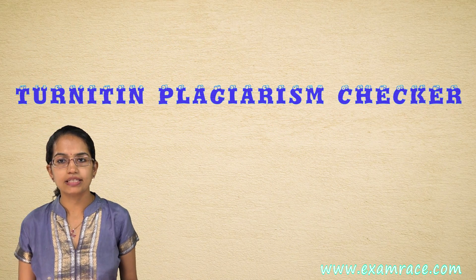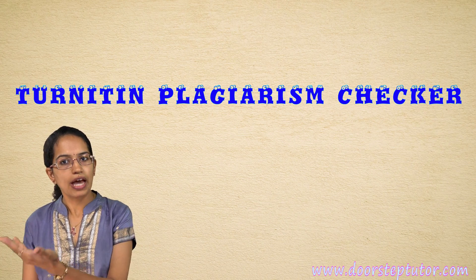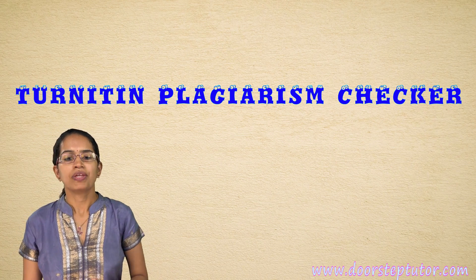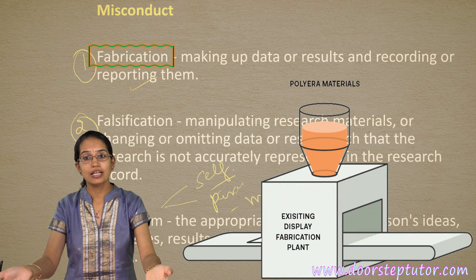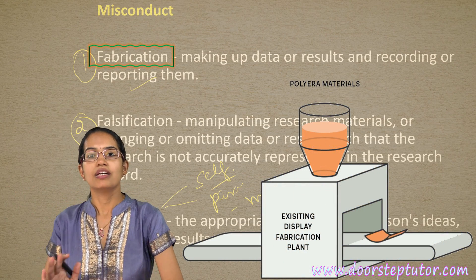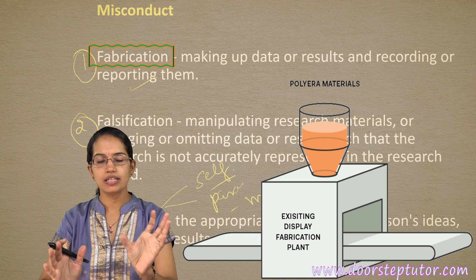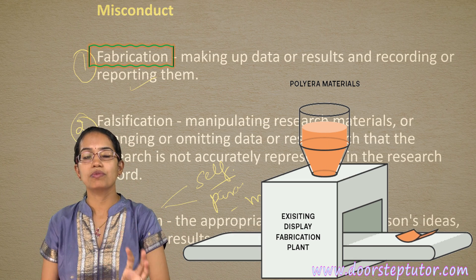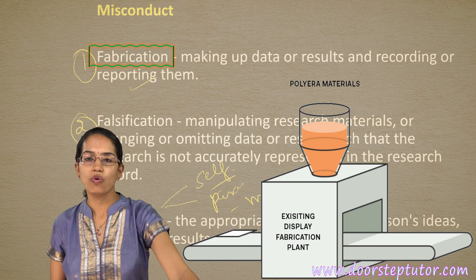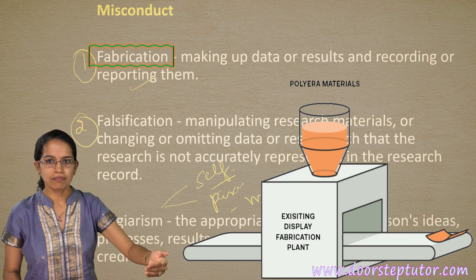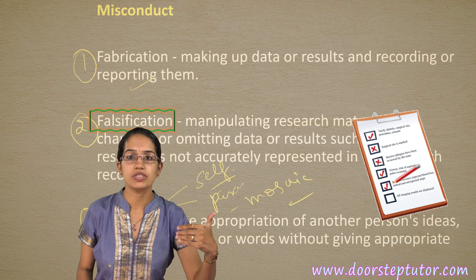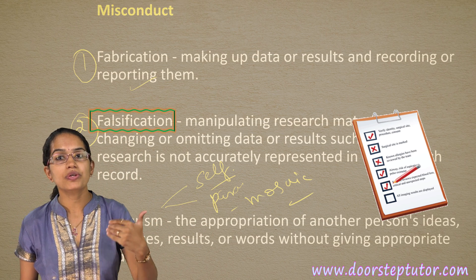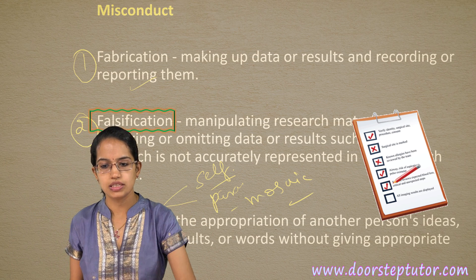There are numerous softwares to detect plagiarism — Turnitin is one of those, and we have a separate lecture on that. The next is fabrication. Fabrication means you want your findings to look a certain way, so you just make up the data to display what you want it to be. However, falsification is different from fabrication — in falsification, you try to bring in false results by manipulating information.